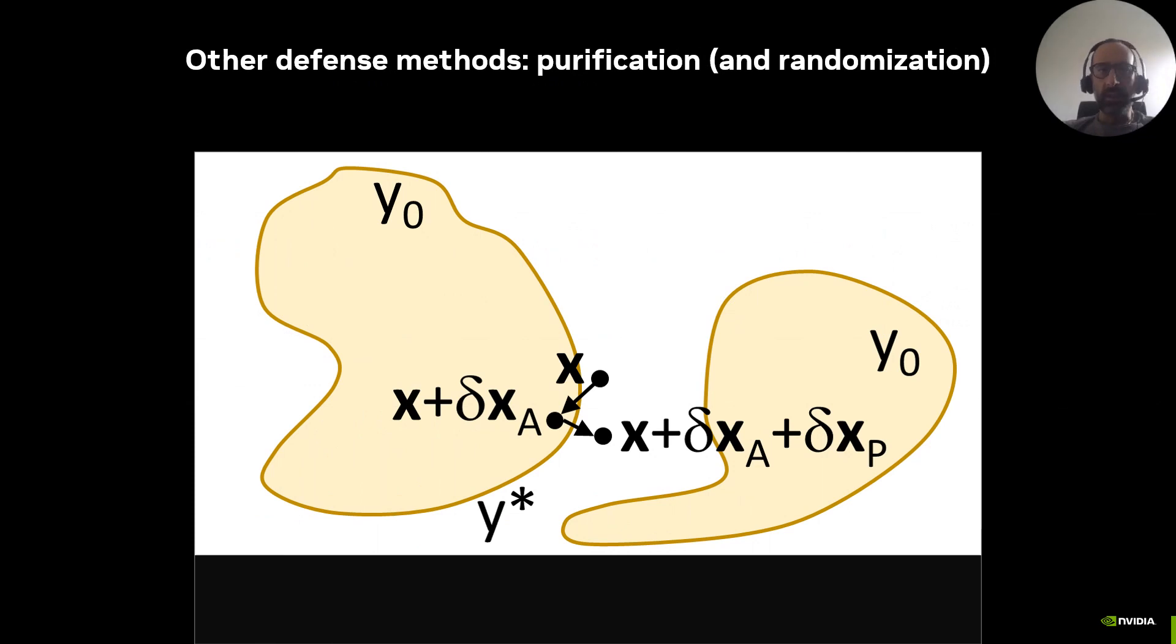Let's do a step back and consider existing defense approaches. This is the case of image purification, but please consider that randomization is also pretty similar. Given an image x belonging to the class y, an attack delta xA moves x into a new position where the classification is incorrect. Purification reprojects the attacked image back to the manifold of natural images and hopefully restores the correct classification.